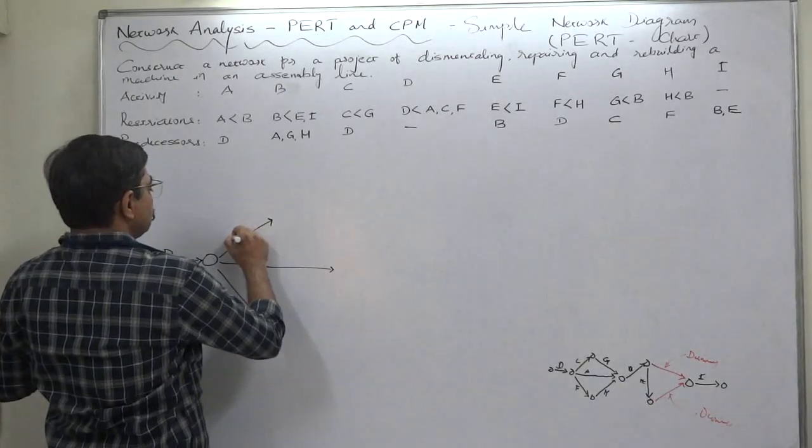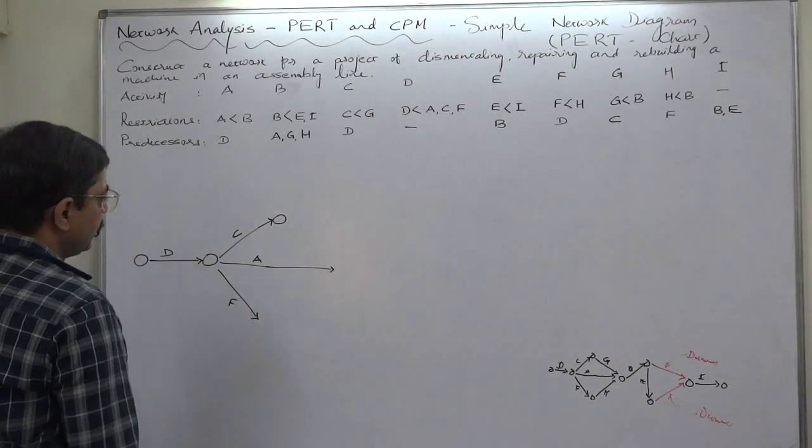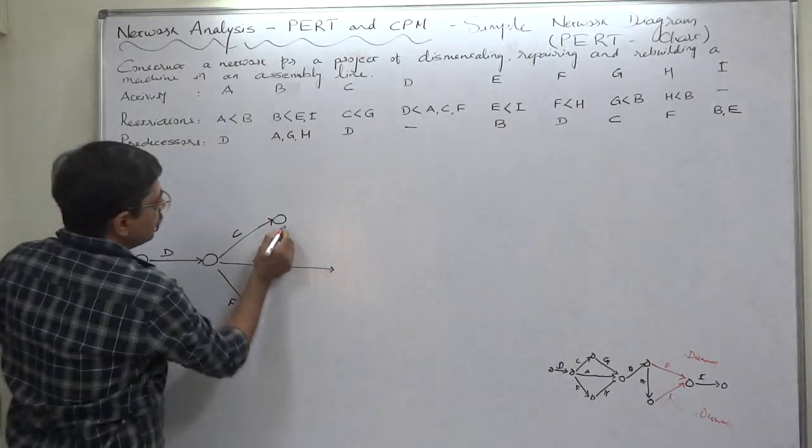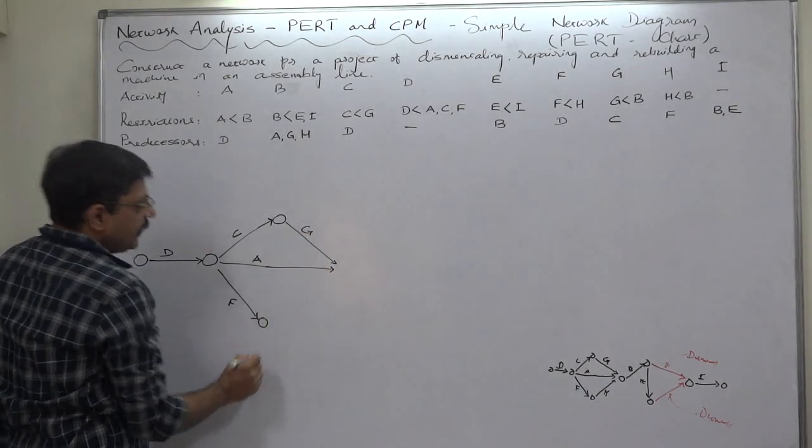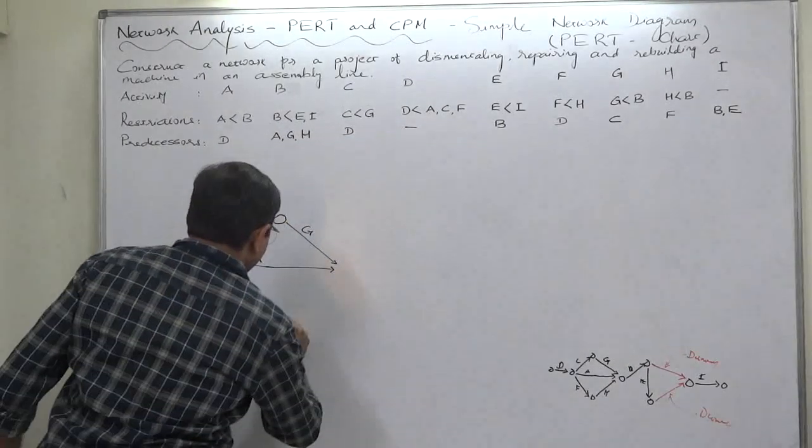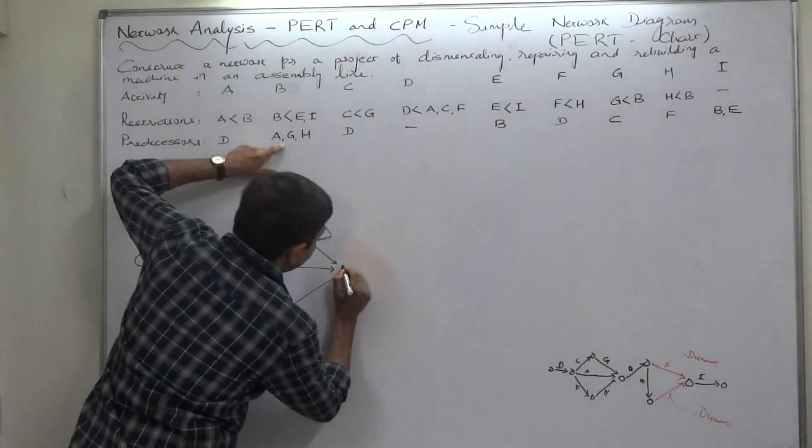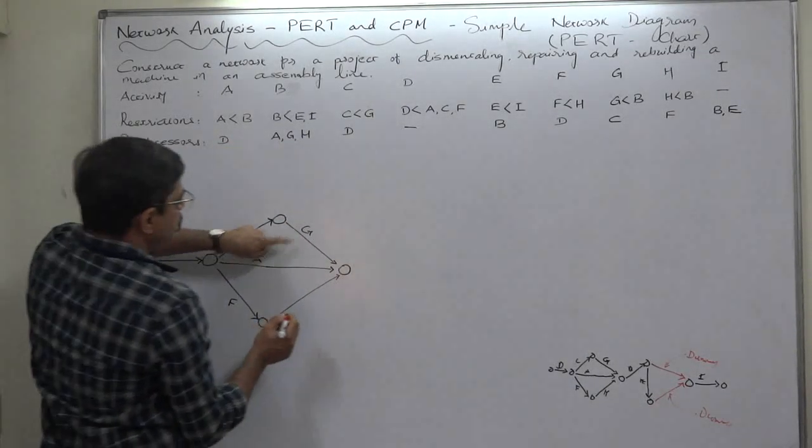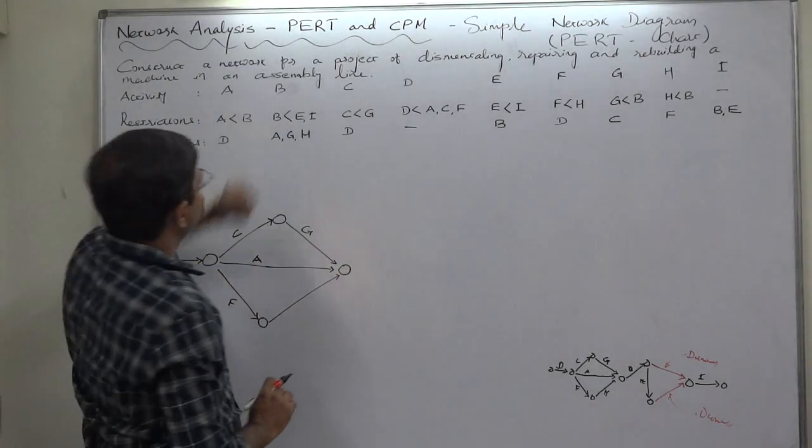Now we can name this as C and this as F, so that C will become the predecessor of G in this way. F will become the predecessor of H in this way. And in this way we shall have the merge event, the event merging A, G, and H. And they become the common predecessor of B.